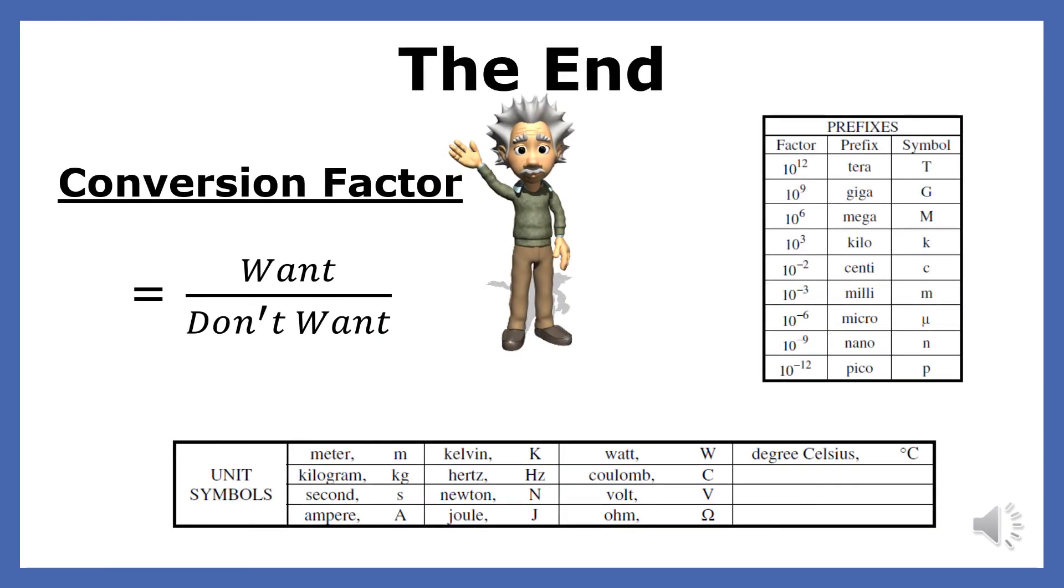Before we put a number into an equation, it must be in the standard units that are found on your reference table. If we are given a number that does not have a standard unit, we can change the unit by using a conversion factor. A conversion factor is a ratio with the unit we want in the numerator and the unit we don't want in the denominator.